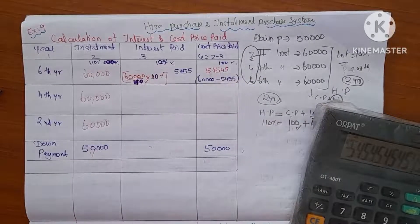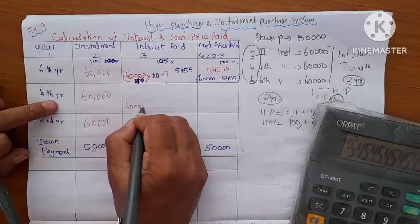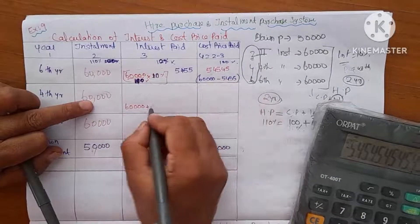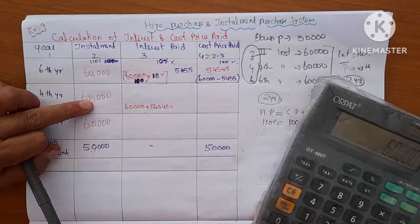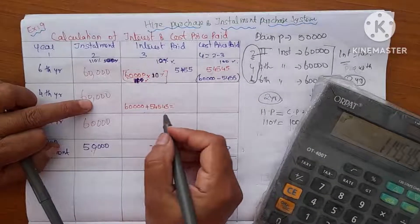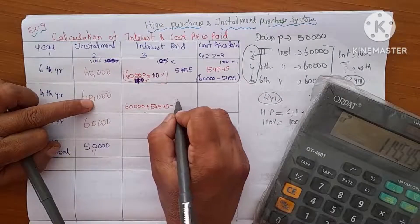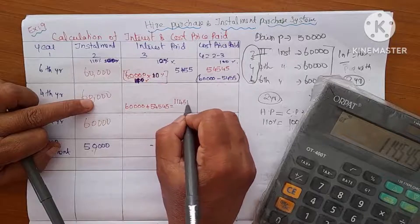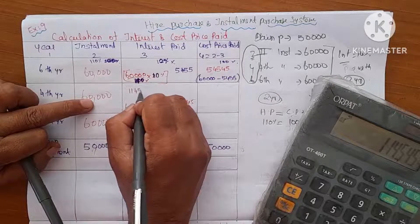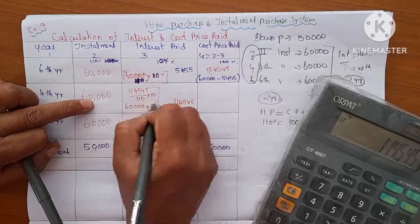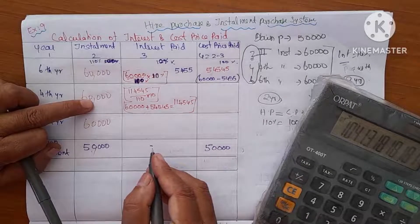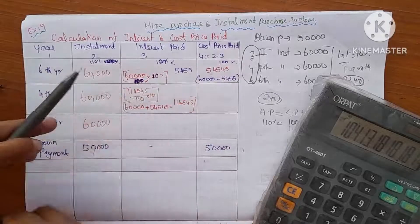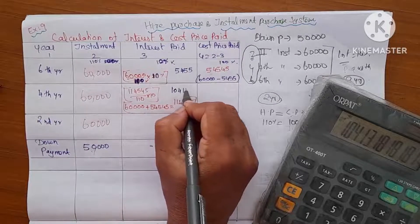So the cost price for the first installment is 60,000 minus 5,455 equals 54,545. Moving to the second installment: the cumulative hire purchase amount is 60,000 plus 54,545 equals 114,545. Then 114,545 divided by 110 multiplied by 10 gives interest of 10,413.